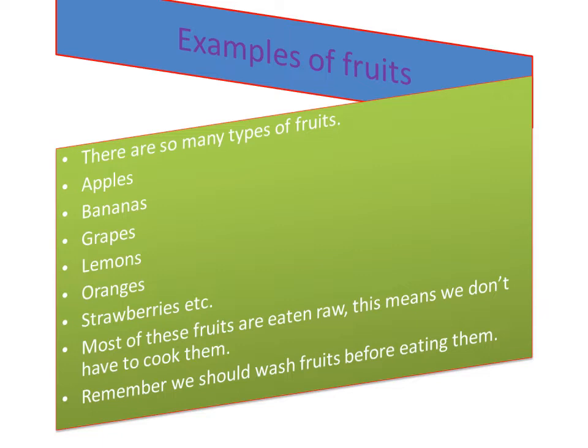There are so many examples of fruits or many types of fruits, but we are only going to mention some that we are able to get. We have apples, bananas, grapes, lemons, oranges, strawberries, and so on. Most of these fruits are eaten raw — we don't have to cook them.